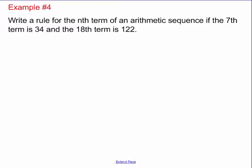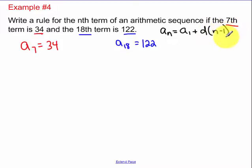In this example, we are writing a rule. Again, remember rule means equation. For the nth term of an arithmetic sequence, where the 7th term is 34, and the 18th term is 122. So that means that a sub 7, because 7th, remember means n, is equal to 34. And the 18th term is equal to 122. And again, we're going to be using the same formula.